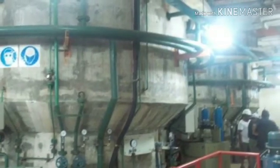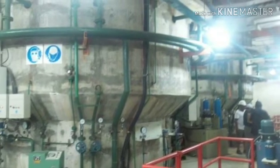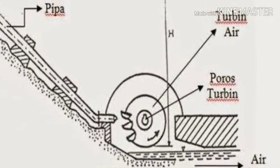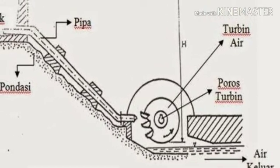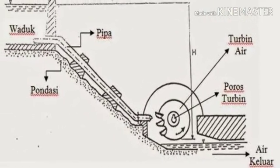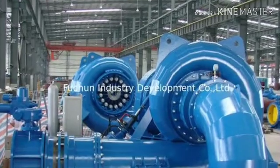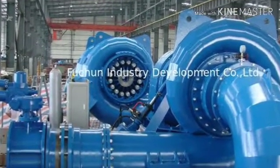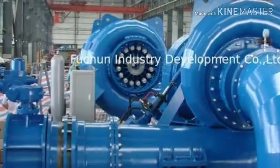The second component is the turbine. The force of falling water pushing against the turbine's blades causes the turbine to spin. A water turbine is much like a windmill, except the energy is provided by falling water instead of wind. The turbine converts the kinetic energy of falling water into mechanical energy.